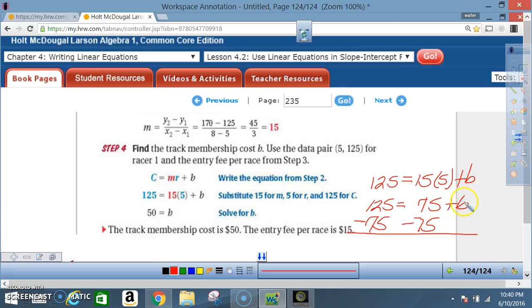You want to get the B by itself, so you're going to subtract 75 from both sides. Why? Because this is a positive 75, so you do the opposite, negative 75. 75 minus 75 goes to 0, so you're left with B by itself. And then 125 minus 75 is 50.